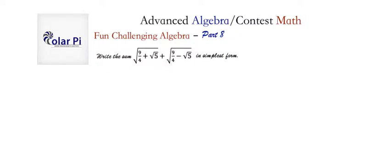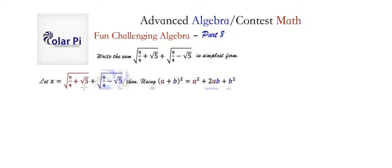So to do that, let's call the sum x. If we call the sum x, then we can view it as being a plus b, where a is what's in maroon here and b is what's in blue here.